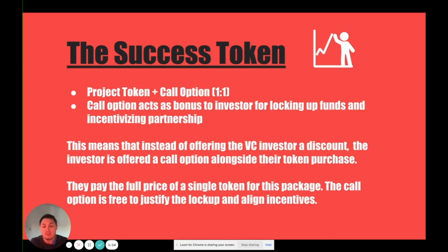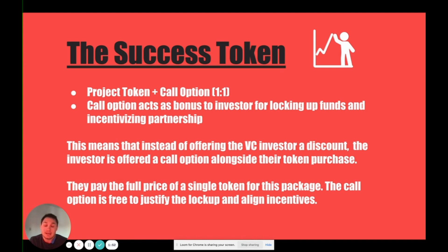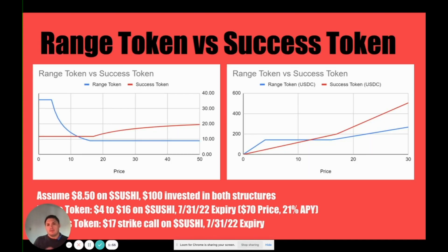The success token, a slight differentiator from the range token, is more of an equity-type token issuance where you sell your project tokens now plus an embedded call option to incentivize investors to buy their tokens at no discount today, with the call option being the free version of a call option which takes away the discount need. The success token is also a vested contract which aligns with reducing the amount of sell pressure that the token will have at any given point in time. The range token and success tokens are two different types of treasury diversification tools that can be used today by any teams.